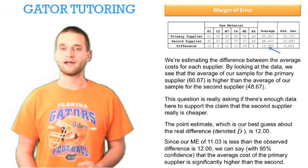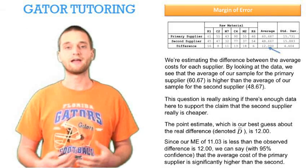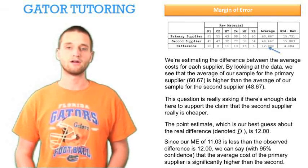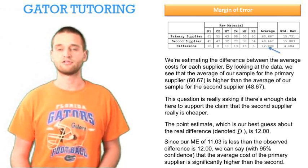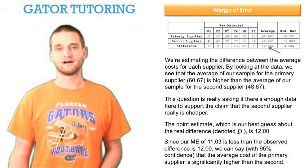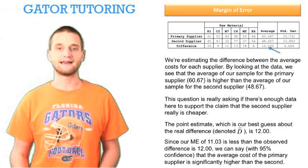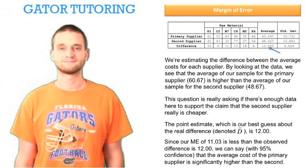Basically, since our margin of error was less than the difference that we observed, we can make a statistical conclusion about what we see in the data. If the margin of error was more than that, say 13 or 14, well, a difference of 12 is not accurate enough. It's not significant enough for us to make any claim about the difference in the cost for the two suppliers. Thank you.